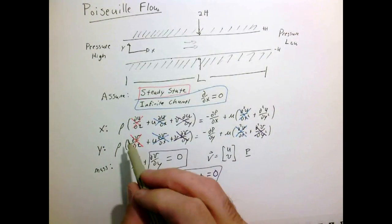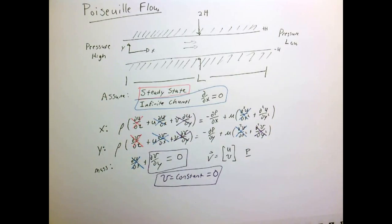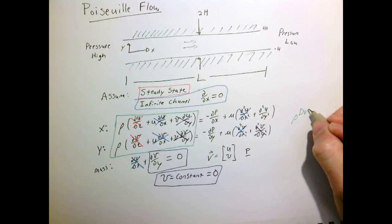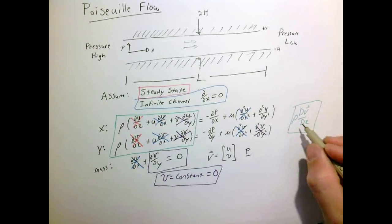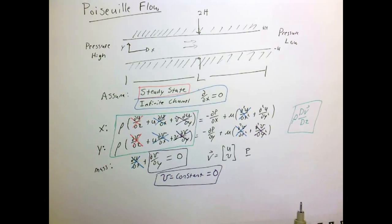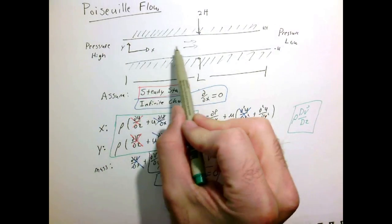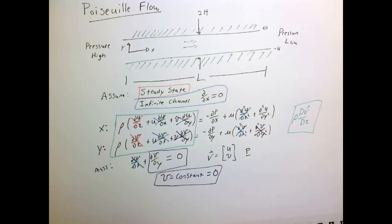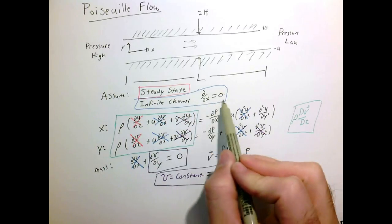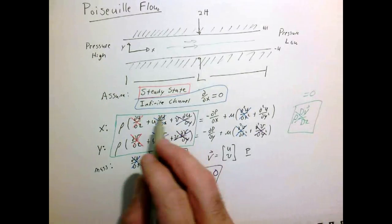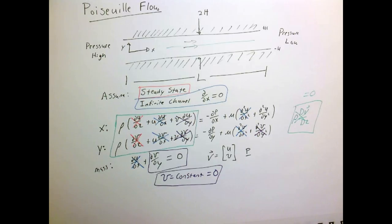Now we can cross out all terms containing v. That eliminates every term on the left-hand side of the equation. Those left-hand side terms — boxed in green — represent the density times the material derivative of velocity, which is the acceleration. It makes physical sense that there's no acceleration: at steady state nothing changes in time, and because of the infinite channel assumption there are no gradients in x. A fluid parcel simply moves at a constant speed, so acceleration equals zero and all those terms drop out.